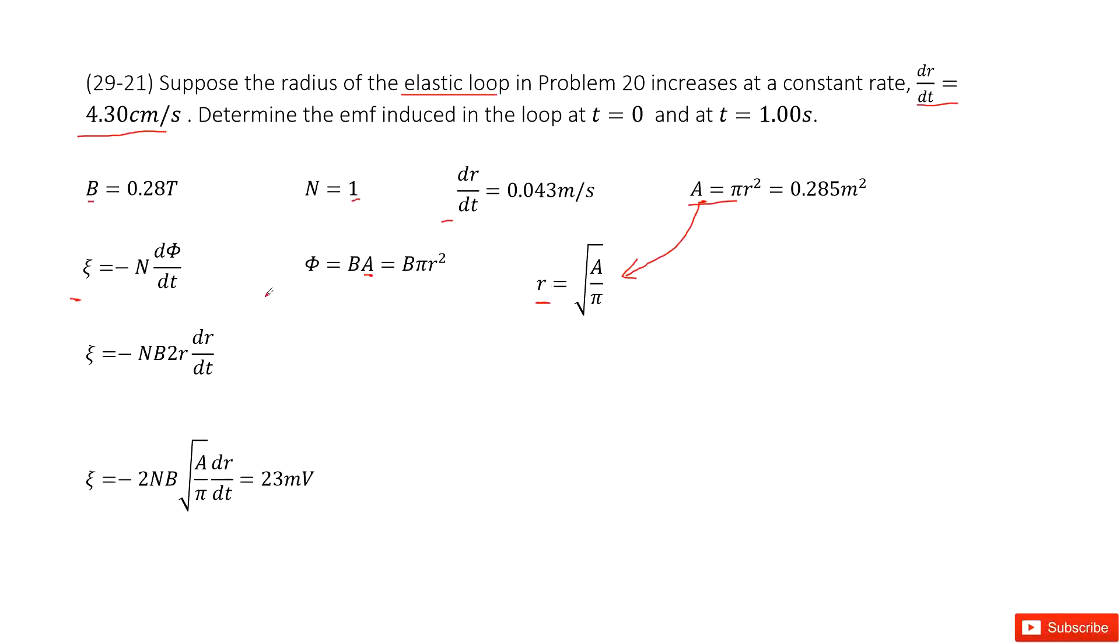Now you can see, we can input this B times A inside to the derivation. We can say B is constant, pi is constant. R squared, so d(R squared) divided by dt is 2R dR/dt. Now we replace R as this equation, and then we get the equation for the emf induced.